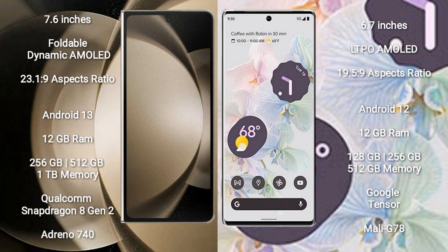Samsung Galaxy Z Fold 5 runs on the Android 13 operating system. It comes with 12GB RAM and 256GB, 512GB, or 1TB internal storage, powered by a Qualcomm Snapdragon 8 Gen 2 processor and Adreno 740 GPU.